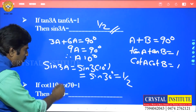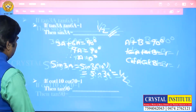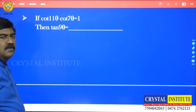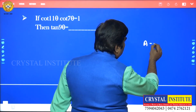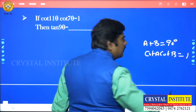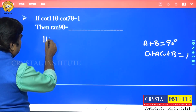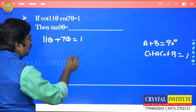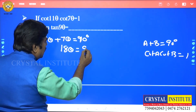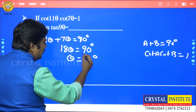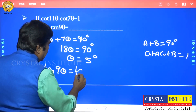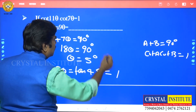Next question: cot11θ · cot7θ = 1, find tan9θ. Using the complementary angle rule, if cot A · cot B = 1, then A + B = 90°. So 11θ + 7θ = 90°, giving 18θ = 90°, therefore θ = 5°. Then tan9θ = tan(9 × 5°) = tan45° = 1. The answer is 1.